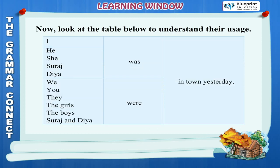I was in town yesterday. He was in town yesterday. She was in town yesterday. Suraj was in town yesterday. Dia was in town yesterday. We were in town yesterday. You were in town yesterday. They were in town yesterday. The girls were in town yesterday. The boys were in town yesterday. Suraj and Diyah were in town yesterday.